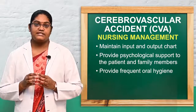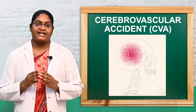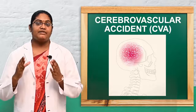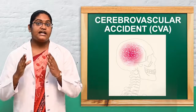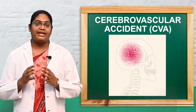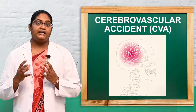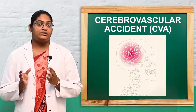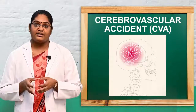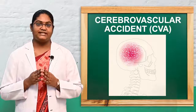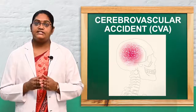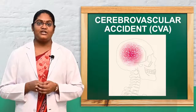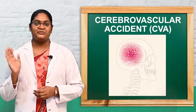Today we discussed cerebrovascular accident and its types. Cerebrovascular accident means a sudden loss of brain function due to brain injury, brain ischemia, or brain hemorrhage — also called stroke, brain attack, or CVA. Hope you all understood today's class. This is Nisha signing off until the next video. Bye bye.